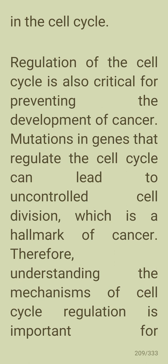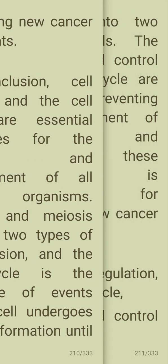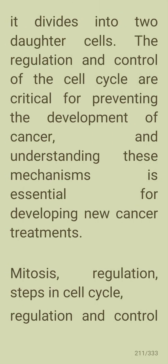Understanding the mechanisms of cell cycle regulation is important for developing new cancer treatments. In conclusion, cell division and the cell cycle are essential processes for the growth and development of all living organisms. Mitosis and meiosis are the two types of cell division, and the cell cycle is the sequence of events a cell undergoes from its formation until it divides into two daughter cells. The regulation and control of the cell cycle are critical for preventing cancer.